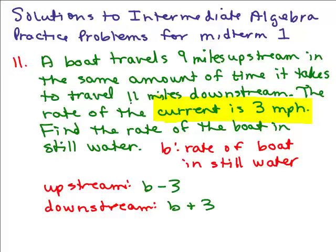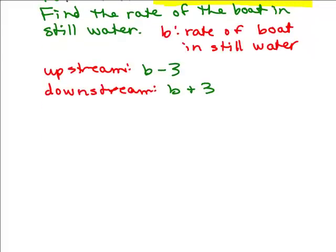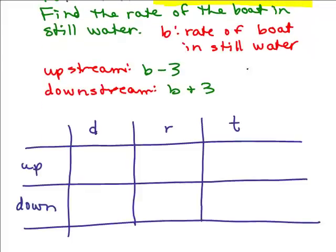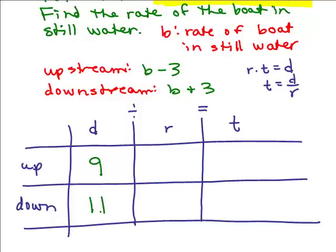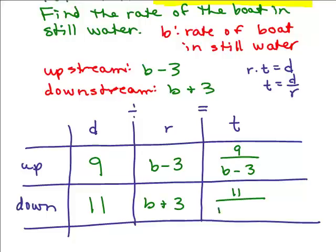Upstream it goes 9 miles, and downstream it goes 11 miles. We're going to keep this information in a chart using the rate times time equals distance formula. Since we're looking for the time, we solve for time: time equals distance over rate. Upstream the distance is 9 and the rate is B minus 3; downstream the distance is 11 and the rate is B plus 3.